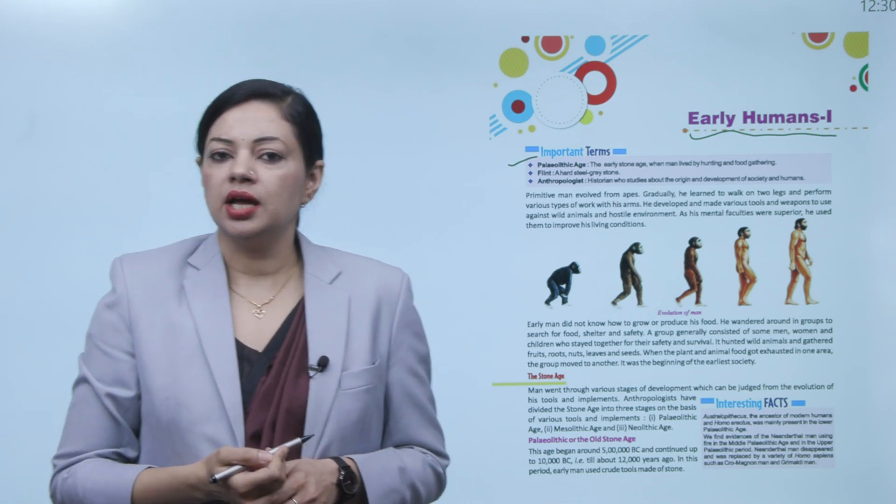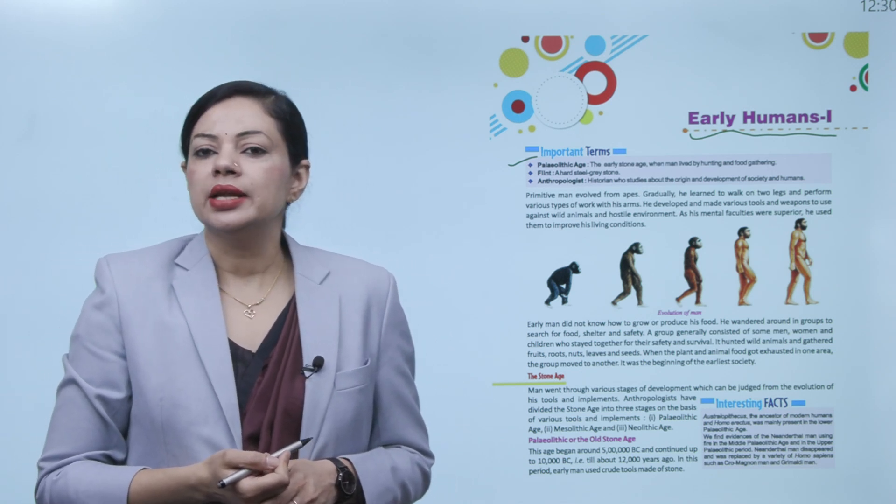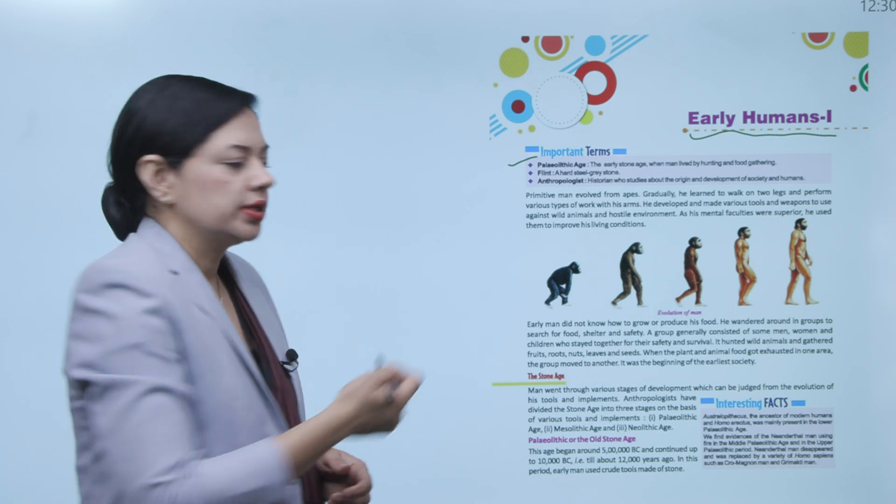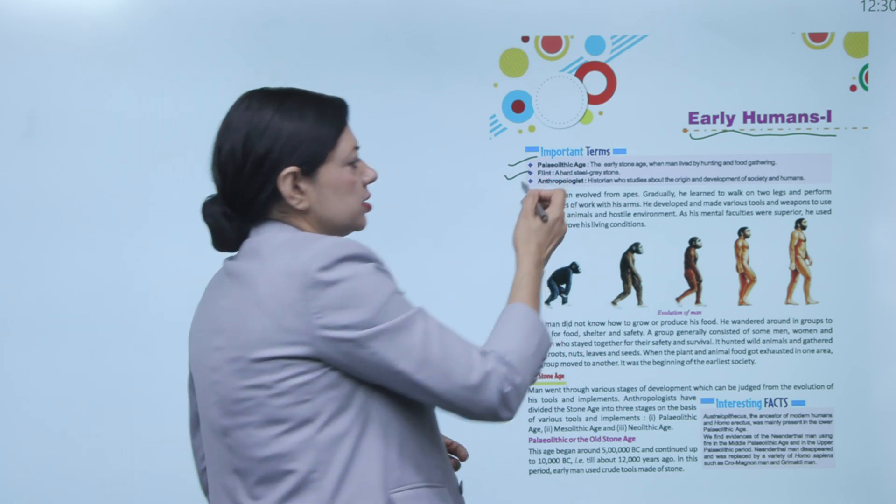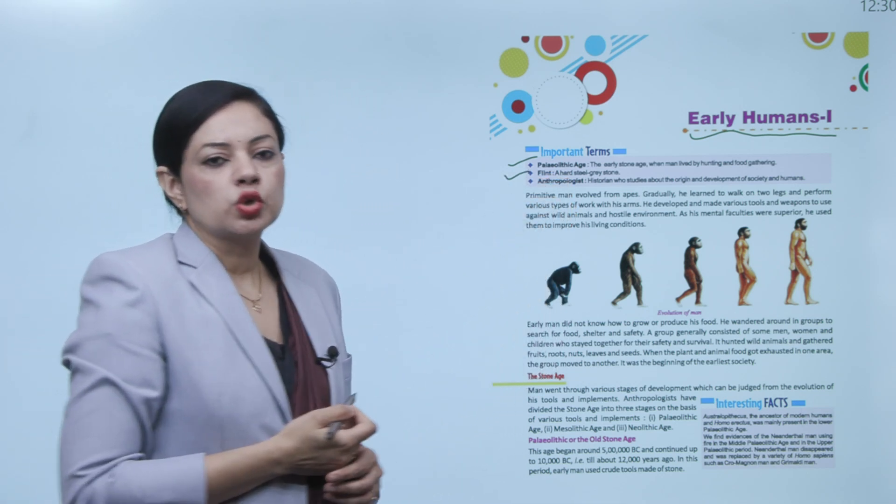Paleolithic age referred to the early Stone Age when men lived by hunting and food gathering. What do you mean by flint? Flint is a hard steel grey stone.